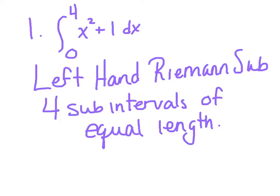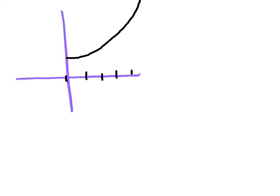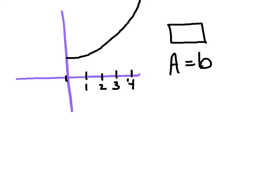They don't always have to be equal length, but today on our first day, we're going to make them all equal length. The first thing you want to do is sketch out the function x squared plus 1 in your notebook — make it fairly large, we're going to draw inside this picture. Our bounds go from 0 to 4. Since we set our shape as a rectangle, think of the area formula: base times height. The base is pretty obvious — from 0 to 4, if I want to fit 4 rectangles, I take the distance and divide by 4 sub-intervals, giving a base of 1 for each one.